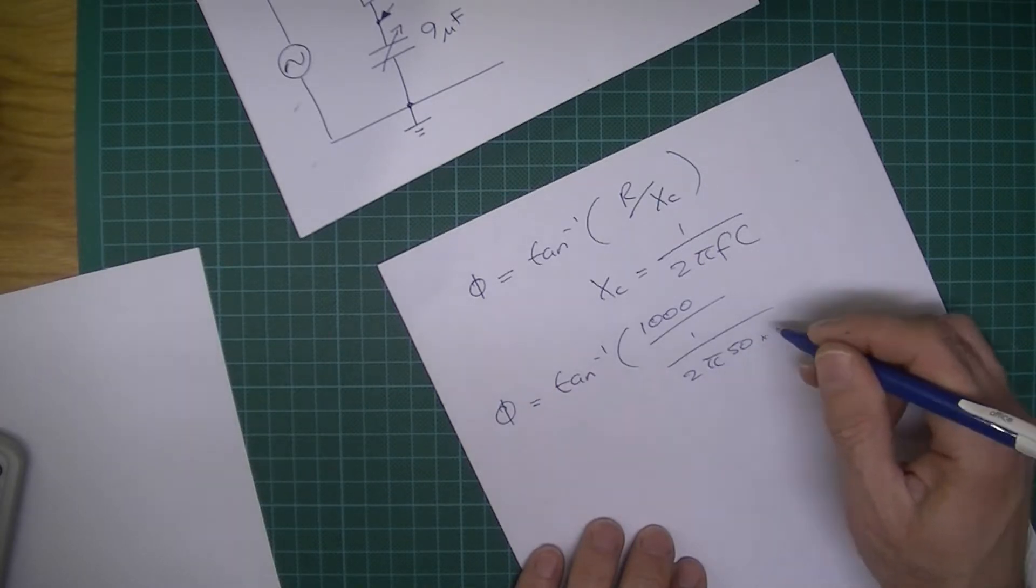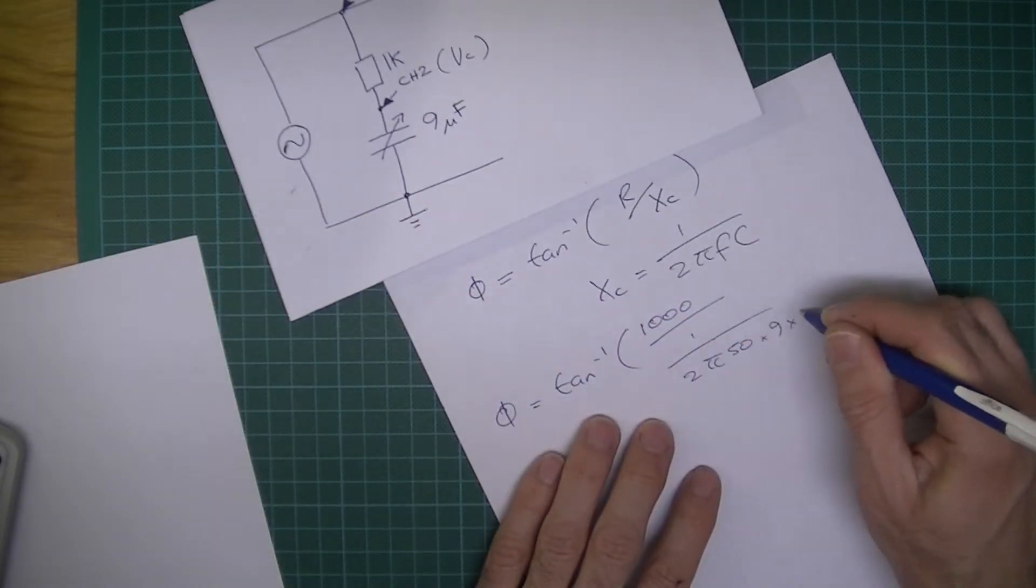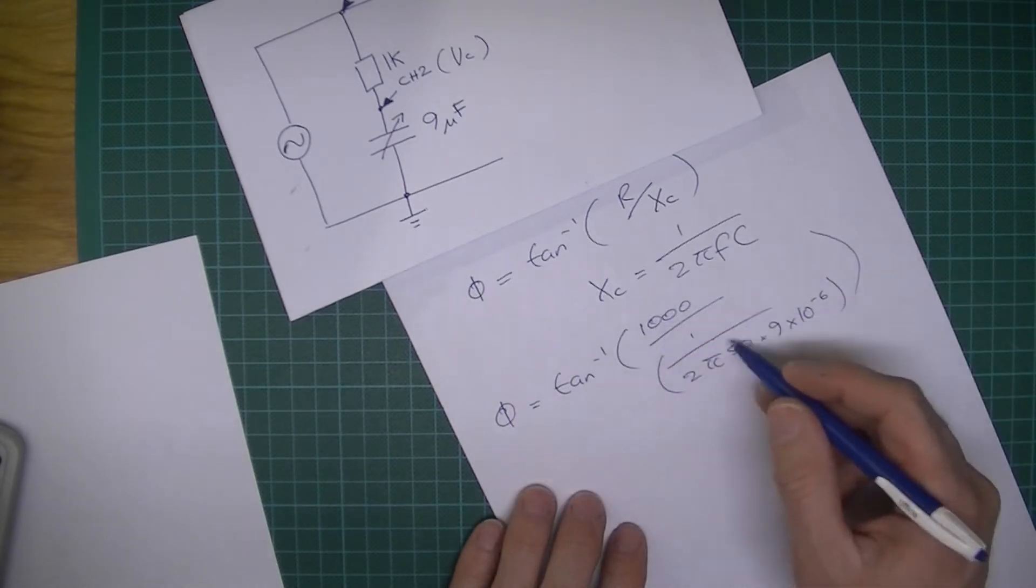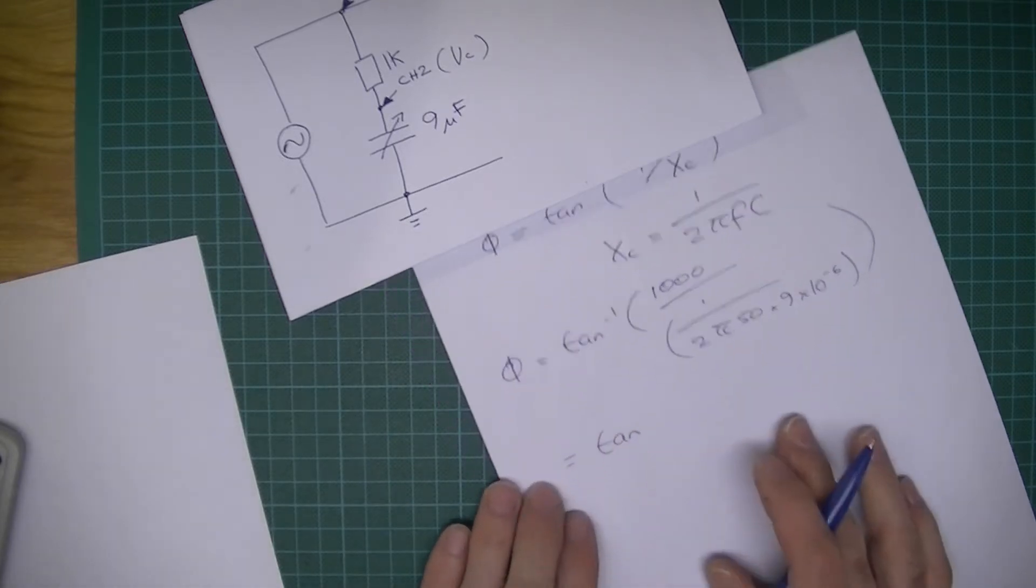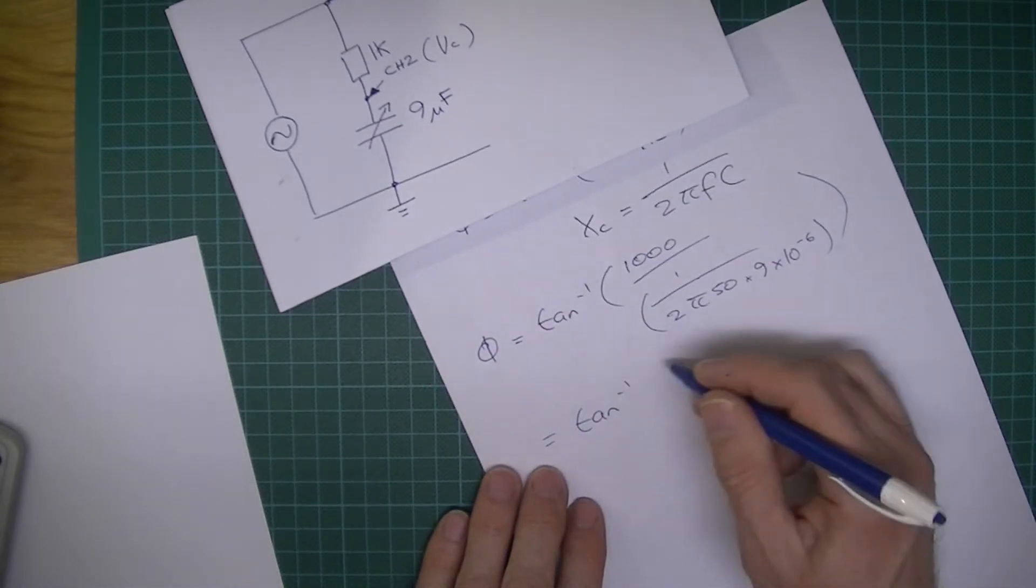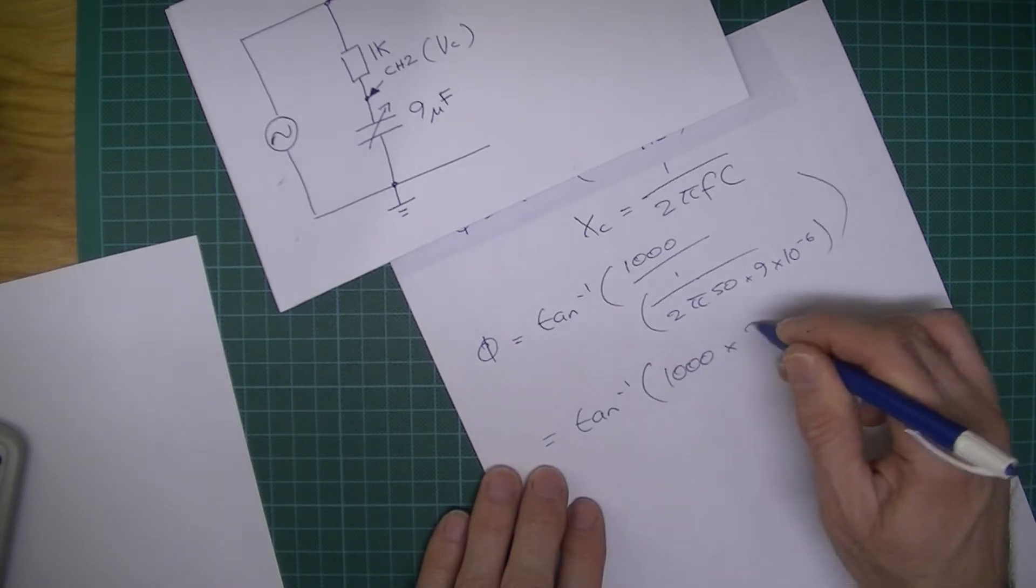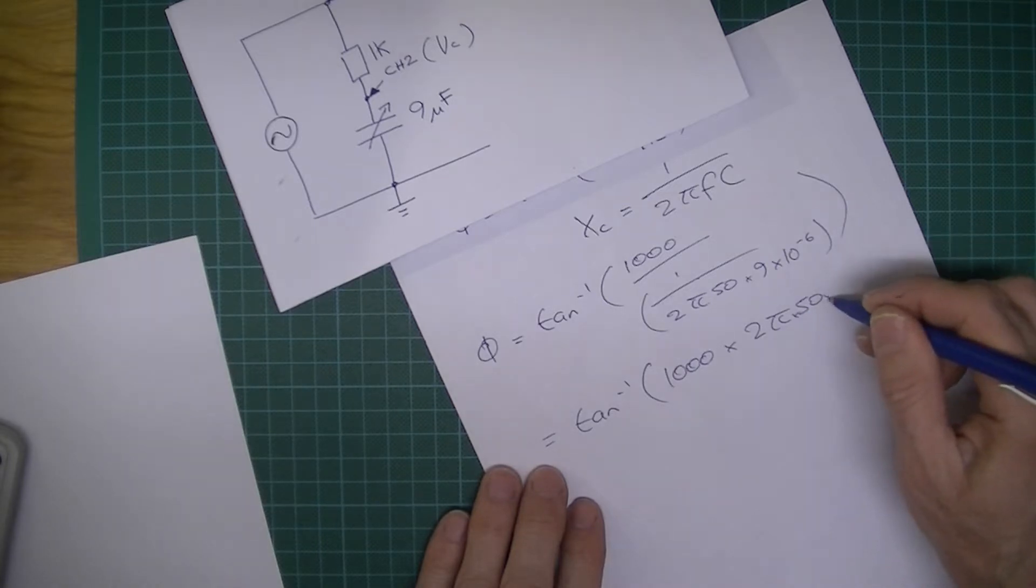Capacitance was 9 microfarad, so times 9 times 10 to the minus 6. If you're going to divide by that, we can simplify that: 10 times 10 times 10 to the minus 6.